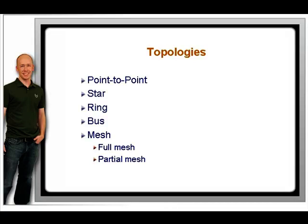A star topology is one in which one host or device has multiple connections to other hosts. This is sometimes called hub-and-spoke as well. In a star topology, if a host wants to send to another host, it must send traffic through the hub or central device. Ethernet, if using a hub or switch and twisted pair cabling, is star wired.